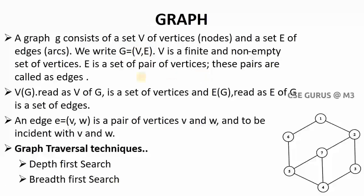V is a finite and non-empty set of vertices, and E is a pair of vertices — that means edges. An edge E equals to (V, W) means two pair of vertices combined with a connection. For example, one to two is an edge and there is no direct connection from one to seven. If you want to go from one to seven, you can start from one, go to two, then go to seven. This is the representation of a graph — you can say it has some cities and their paths, highway sections, how they are connected. So points as cities and edges as highway paths.